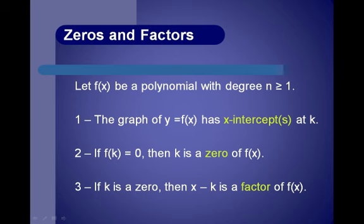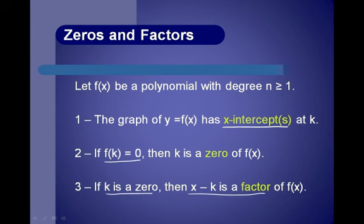This just says that all these mean the same thing. The x-intercepts are the same things as the zeros. And if k is a zero, then x minus k is a factor.